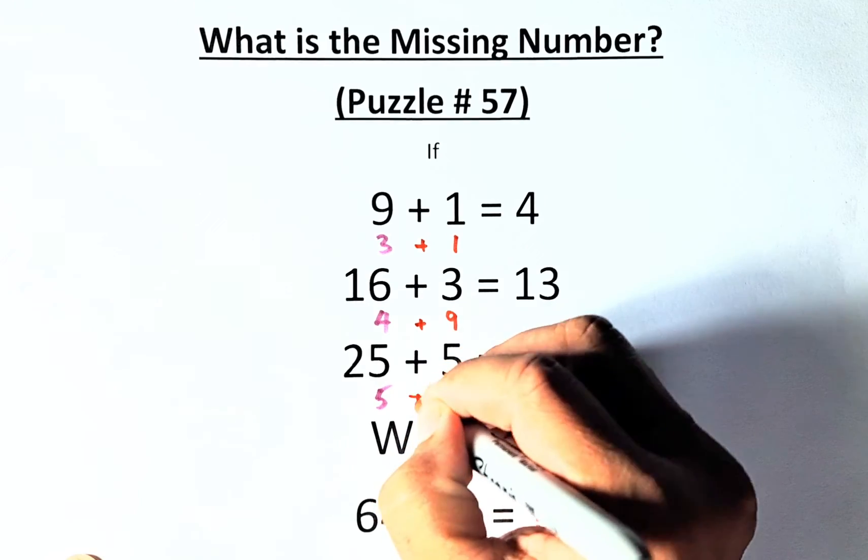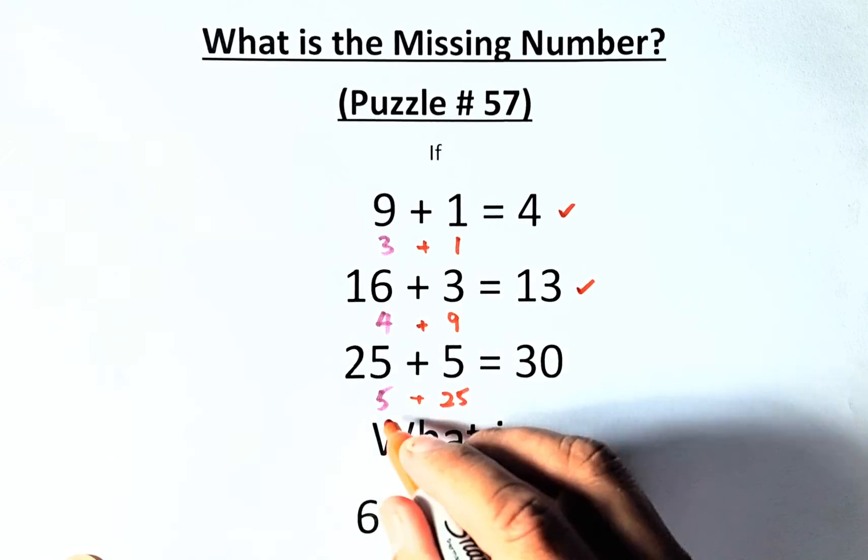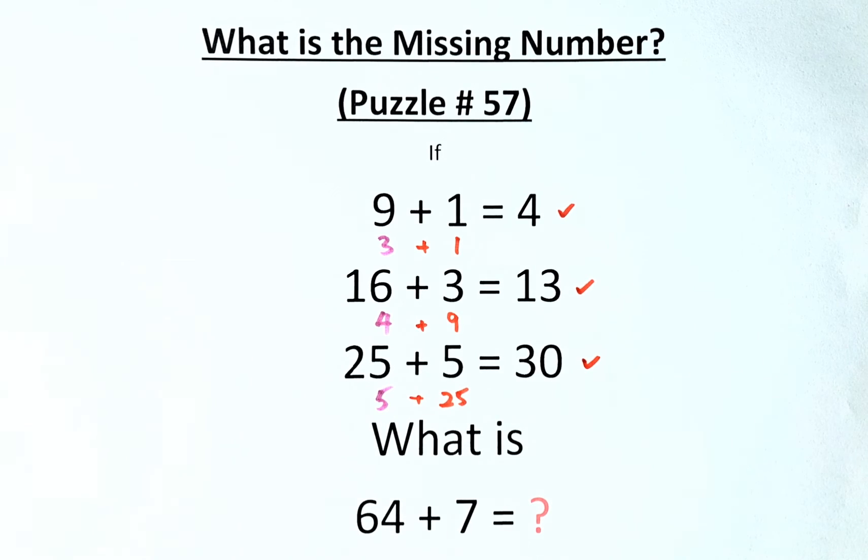And then you're going to add them up. 3 plus 1 is 4, 4 plus 9 is 13, 5 plus 25 is 30.